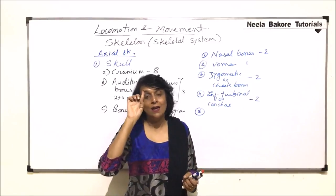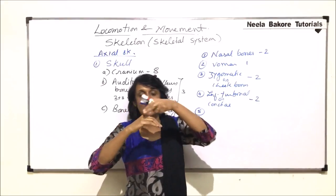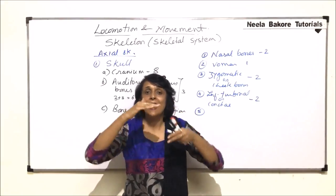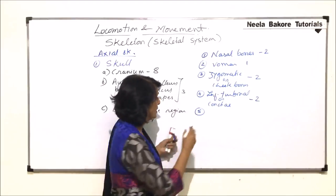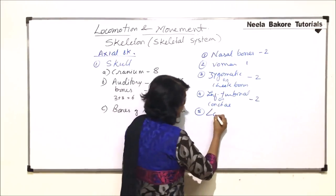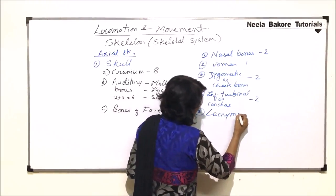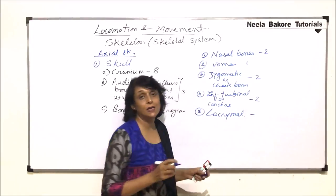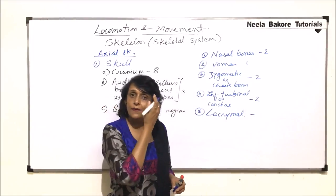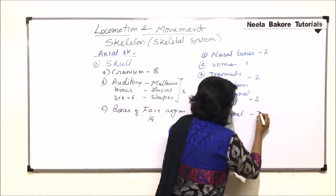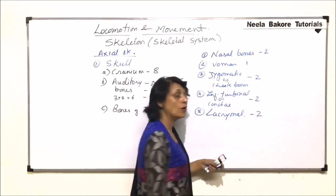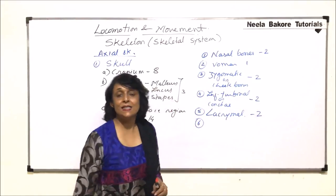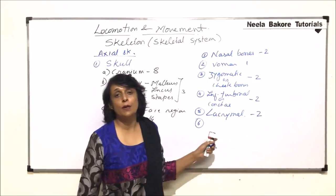The next bones are the lacrimal bones. These support the lacrimal gland in the orbit region. The part of the orbit just above the lacrimal gland has a bone to support it. They are paired bones — one in each orbit.